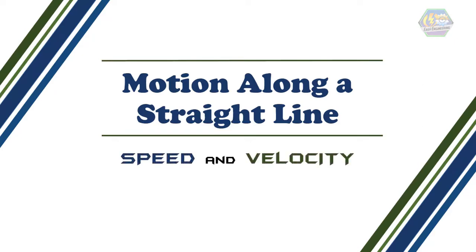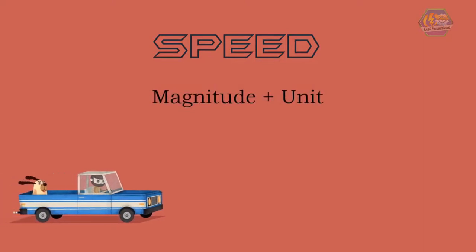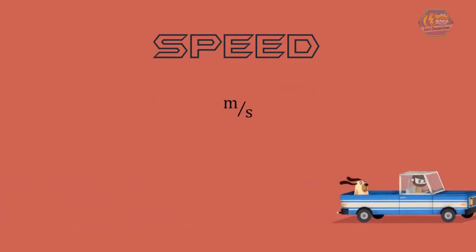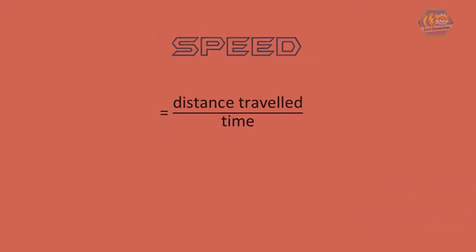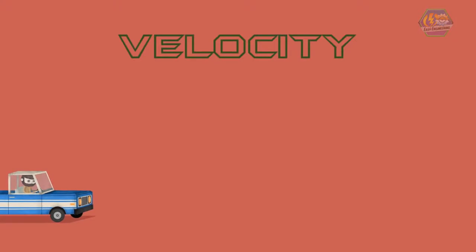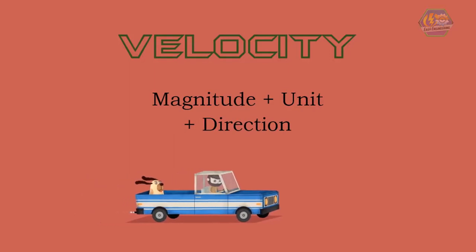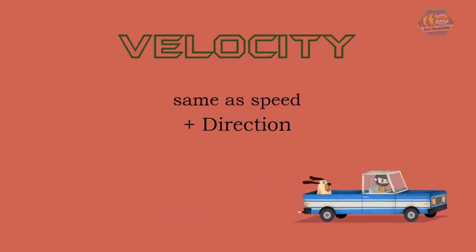First, let's define the following terms. Speed is a scalar quantity composed of a magnitude and a unit. Its SI unit is meter per second, and the formula is distance traveled divided by time. On the other hand, velocity is a vector quantity composed of a magnitude, a unit, and a direction. Its SI unit is also meter per second — the same as speed, but with direction.